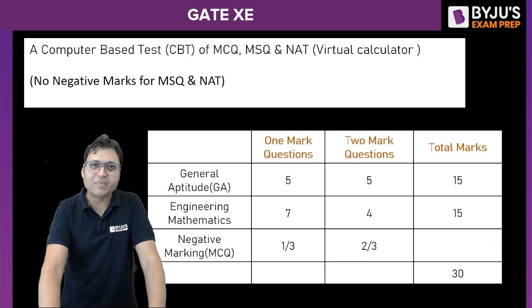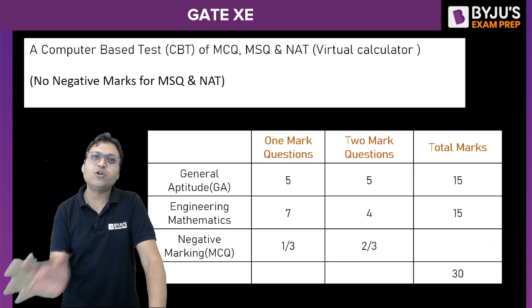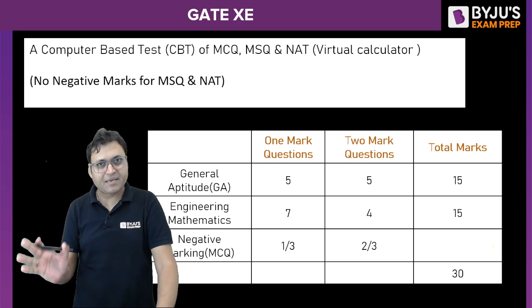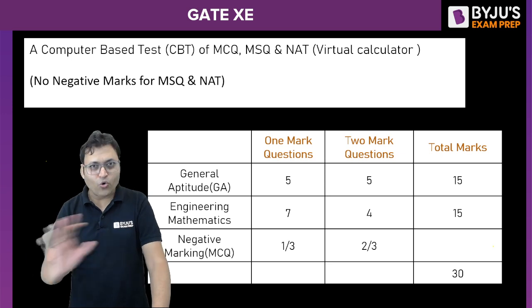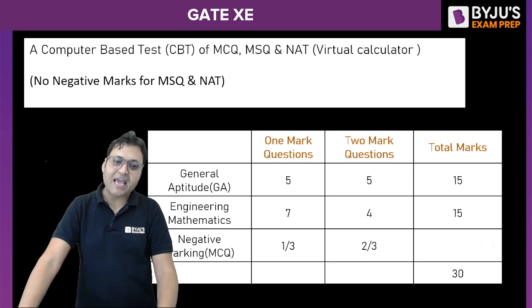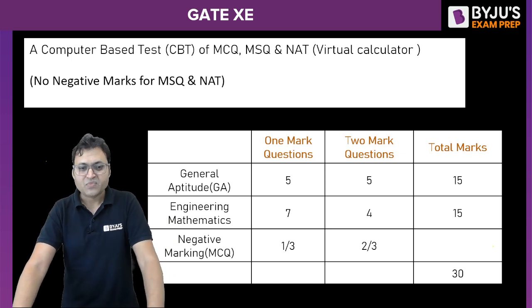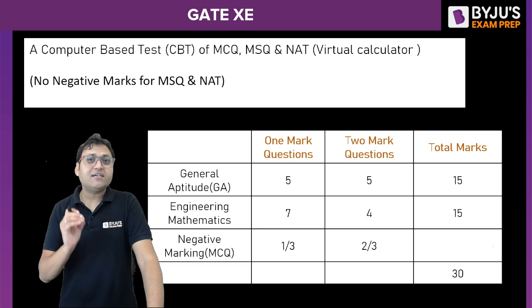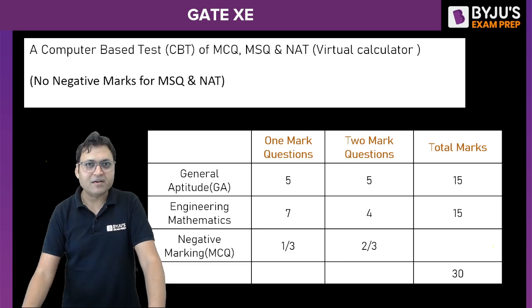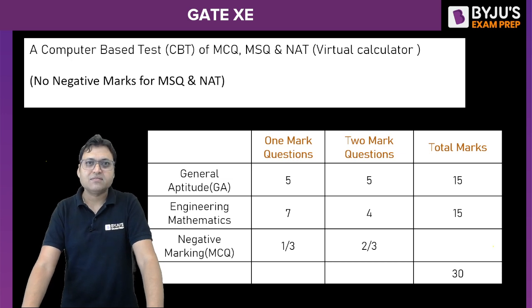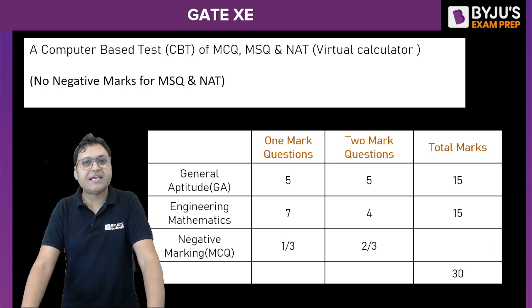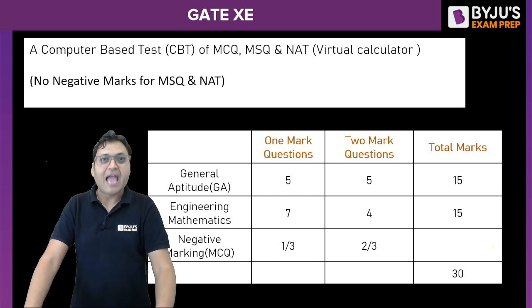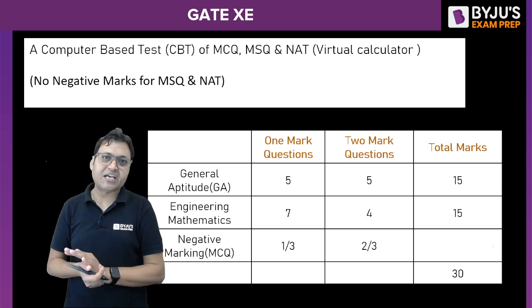The GATE engineering science paper is very similar to your regular stream paper. It is a CBT containing MCQs, MSQs, and NATs. There is no negative marking for MSQs and NATs, but there is negative marking for MCQs. The GATE engineering science XE paper is one of 29 papers in the GATE exam, consisting of nine sections in total — including General Aptitude (GA) and eight different sections labeled A to H.